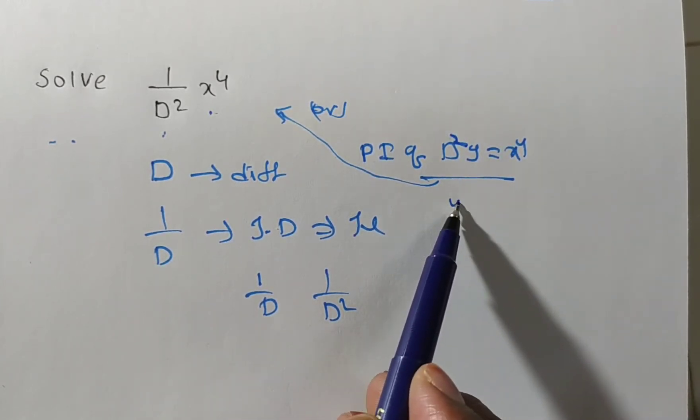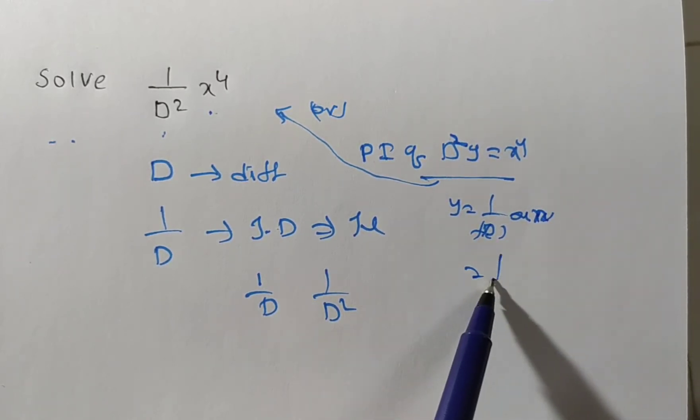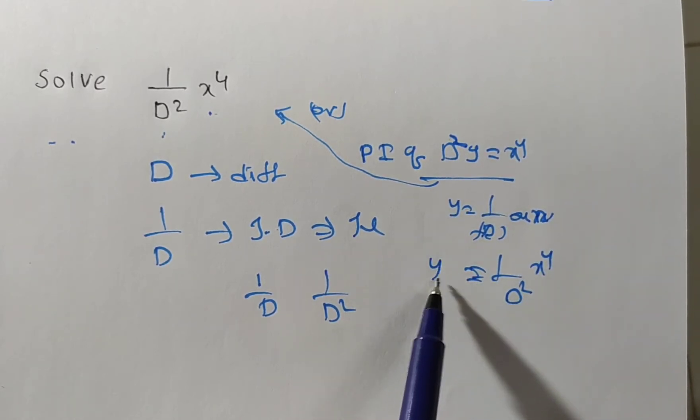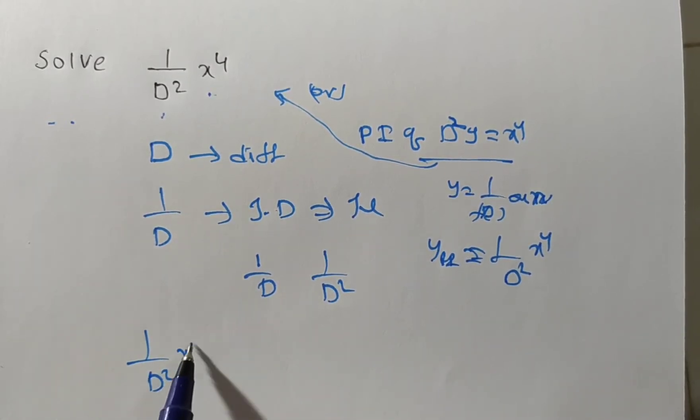In this case, the particular integral is y equals 1 by f of D into q of x. So here 1 by f of D is D squared and q of x is x to the power of 4. This is y_pi.